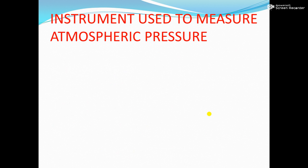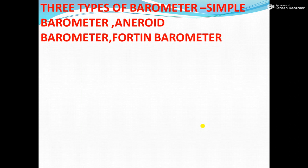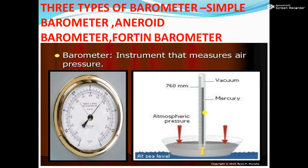First, the instrument used to measure atmospheric pressure. A barometer is used to measure air pressure or atmospheric pressure. There are three types of barometer: simple barometer, aneroid barometer, and Fortin barometer. This is a picture of an aneroid barometer, and this is a picture of a simple barometer. One by one we will discuss.